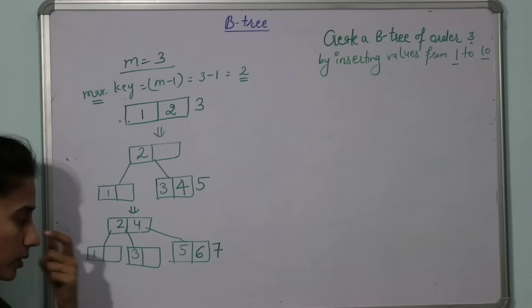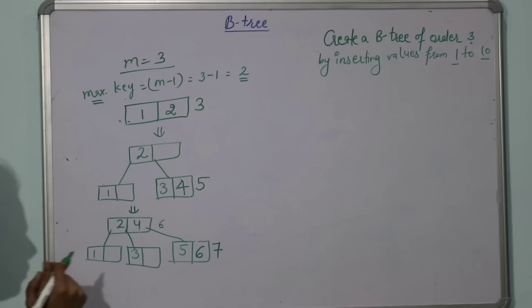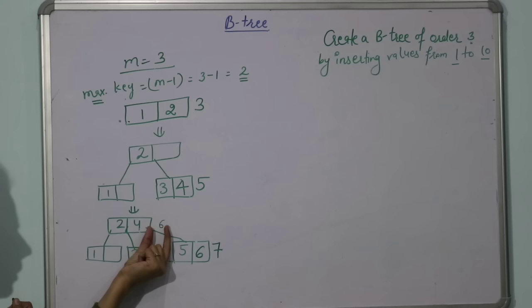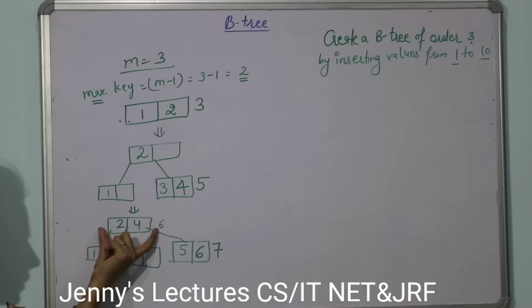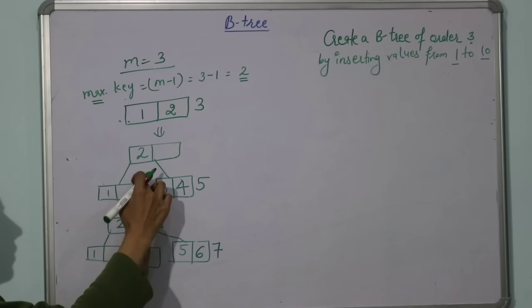Splitting will happen at the median element, that is 6. 6 would go one level up to the parent. But if 6 goes here, that is also not possible because it's already full, two keys maximum. So again splitting would be applied to the parent or the root. We find the median element, which is 4, and 4 would go to its parent. Since it has no parent, it goes one level up. 4 will become the new root.